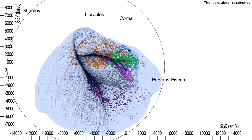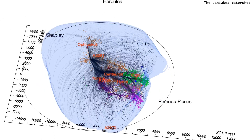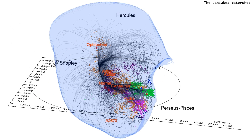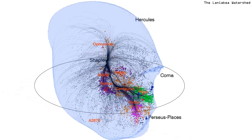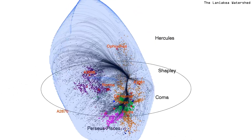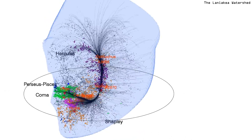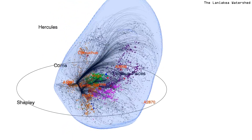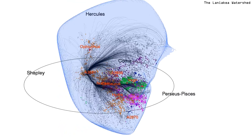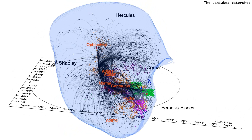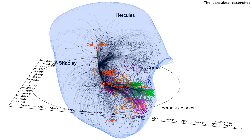Galaxies from the redshift catalogue are again superimposed with colours distinguishing separate major features. A surface encloses the limits of the watershed. Black vectors illustrate the cosmic flow of galaxies towards a location near the Norma cluster and the local potential minimum of this basin of attraction.